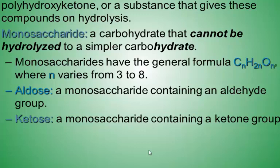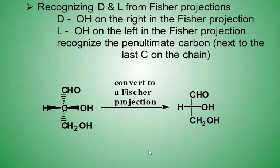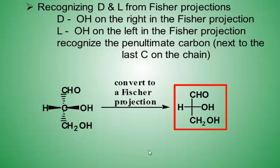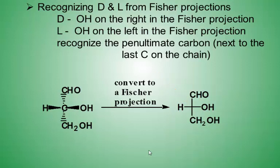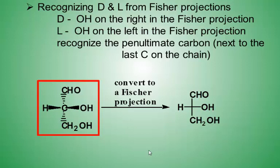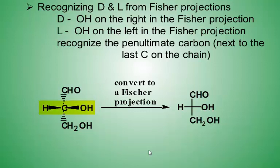A polyhydroxy aldehyde can also be called an aldose, and a ketose is a polyhydroxy ketone. A Fischer projection is an important structural representation of carbohydrates. The intersection of the crossed lines represents a carbon with four groups attached. A more familiar representation is a three-dimensional Lewis structure, where the horizontal lines are groups coming towards you, and groups bonded in the vertical direction are pointing away from you into the screen.